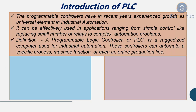These controllers can automate a specific process, machine function, or even an entire production line. Programmable Logic Controllers have been an integral part of factory automation and industrial process control for decades. PLCs control a wide array of applications from simple lighting functions to environmental systems to chemical processing plants. These systems perform many functions, providing a variety of analog and digital input and output interfaces along with data conversion and various communication protocols. All PLC components and functions are centered around the controller, which is programmed for a specific task.